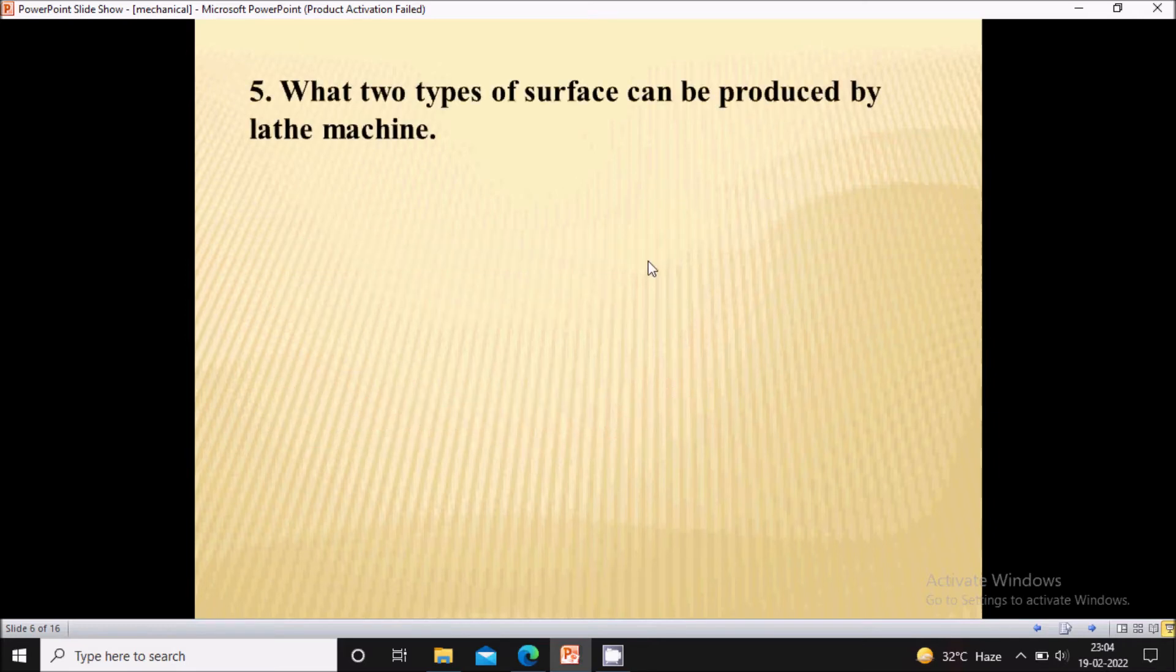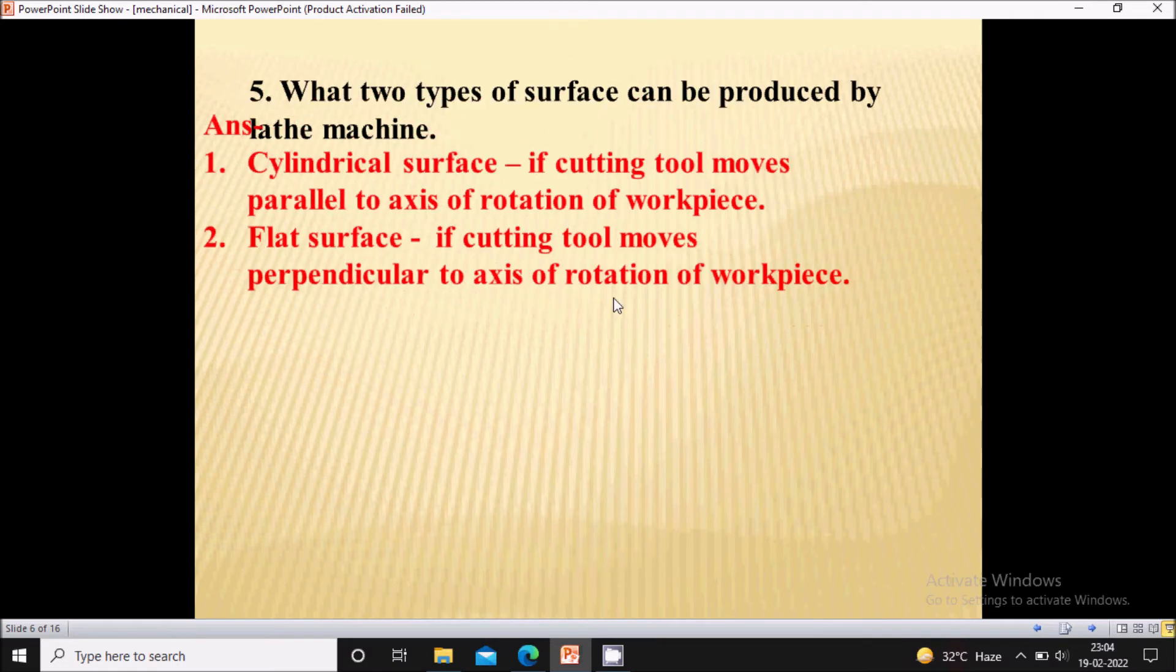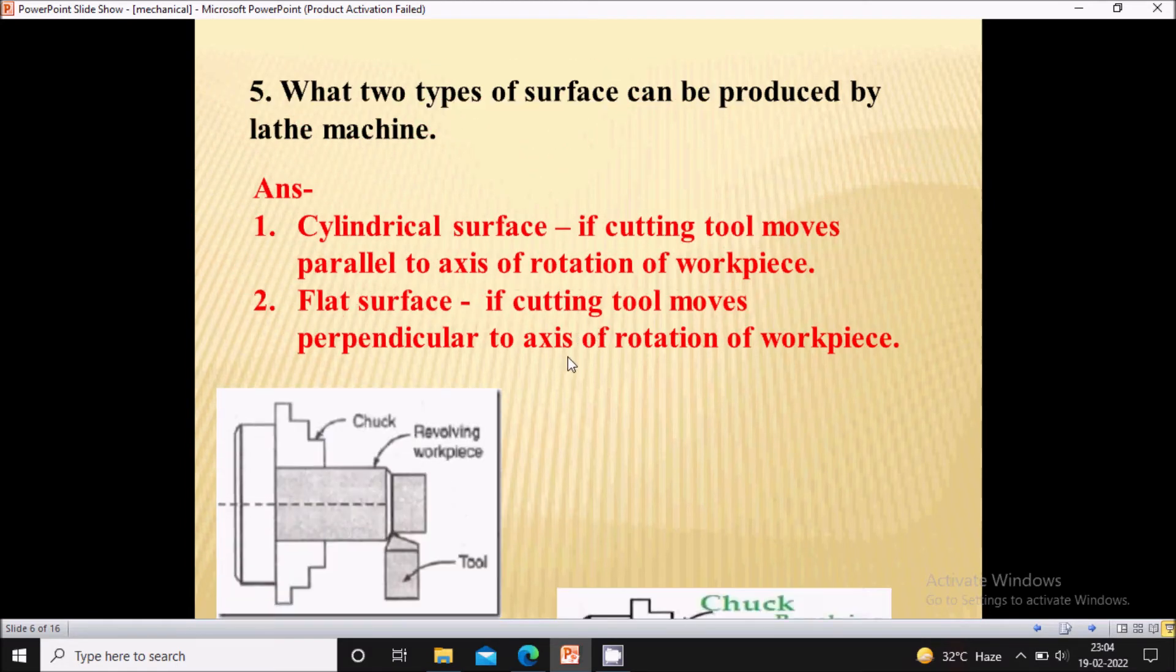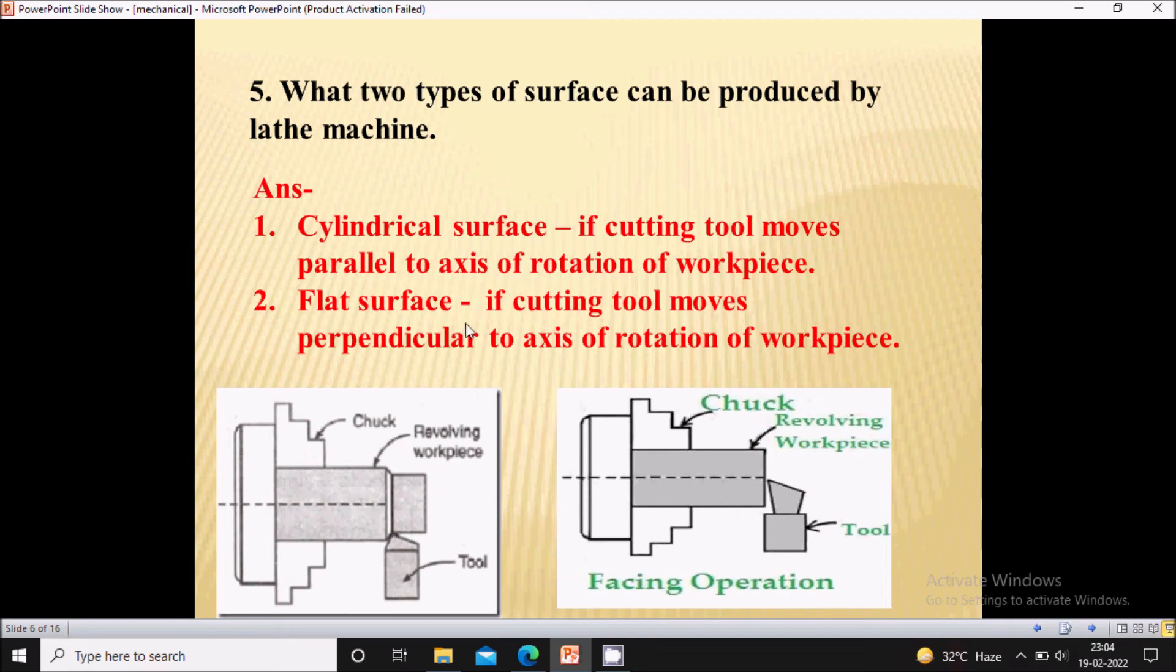Fifth question, what two type of surface can be produced by lathe machine? So by lathe machine, cylindrical surface and flat surface can be produced. If the cutting tool is moving parallel to the axis of rotation, then cylindrical surface will produce.